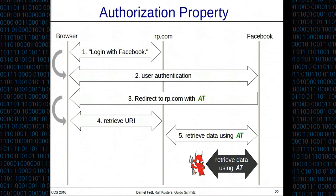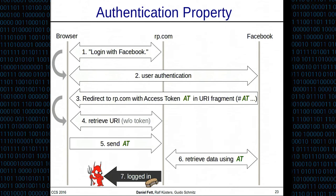Let's start with the authorization property. The authorization property says that an attacker should be unable to get hold of an access token, which would allow the attacker to act on the user's behalf at Facebook, for example. Then we also have the authentication property, which says that the attacker should be unable to log in at the relying party under an honest user's identity.